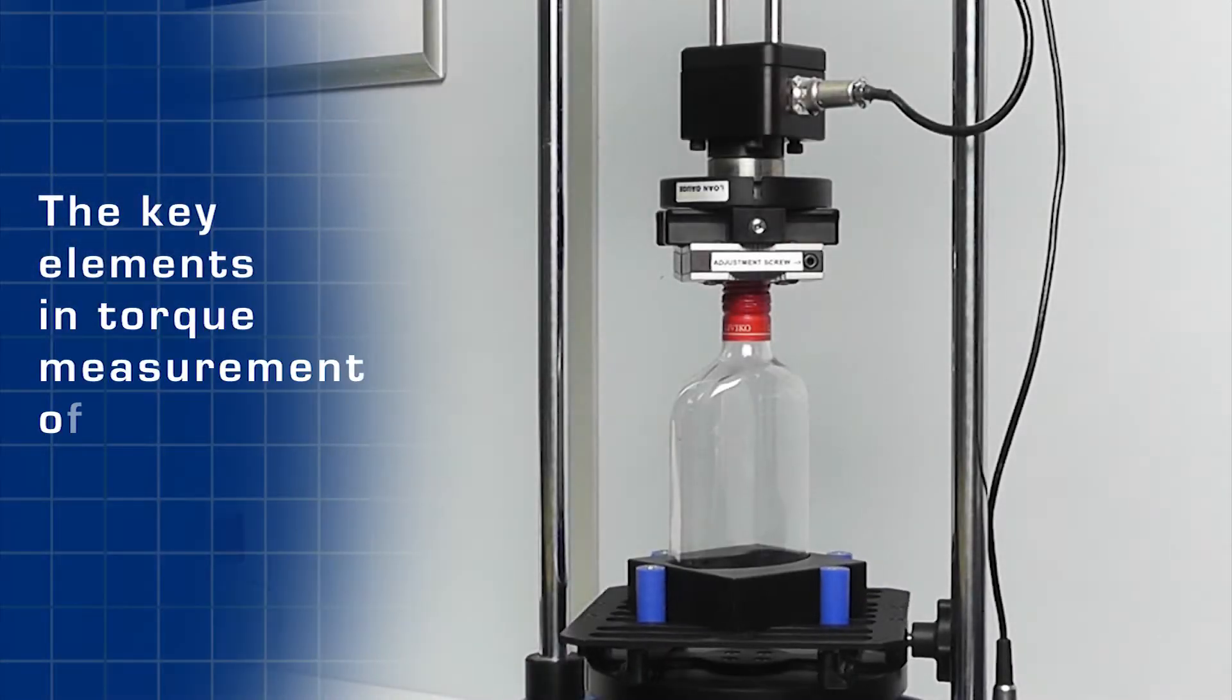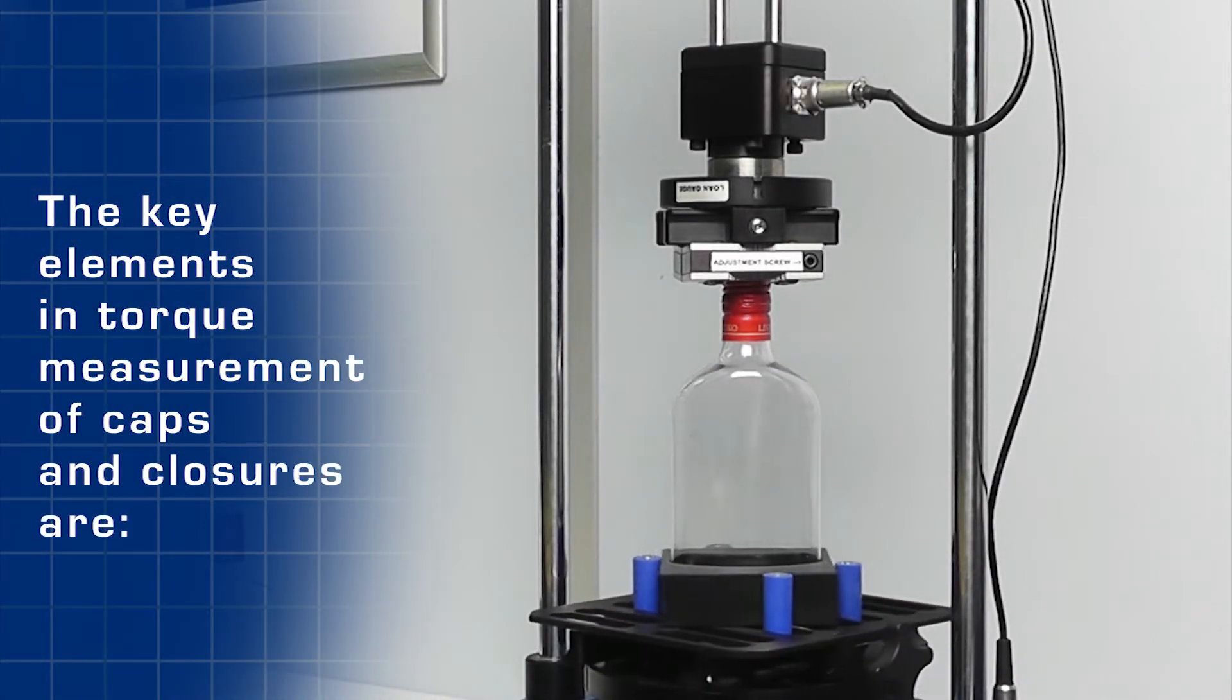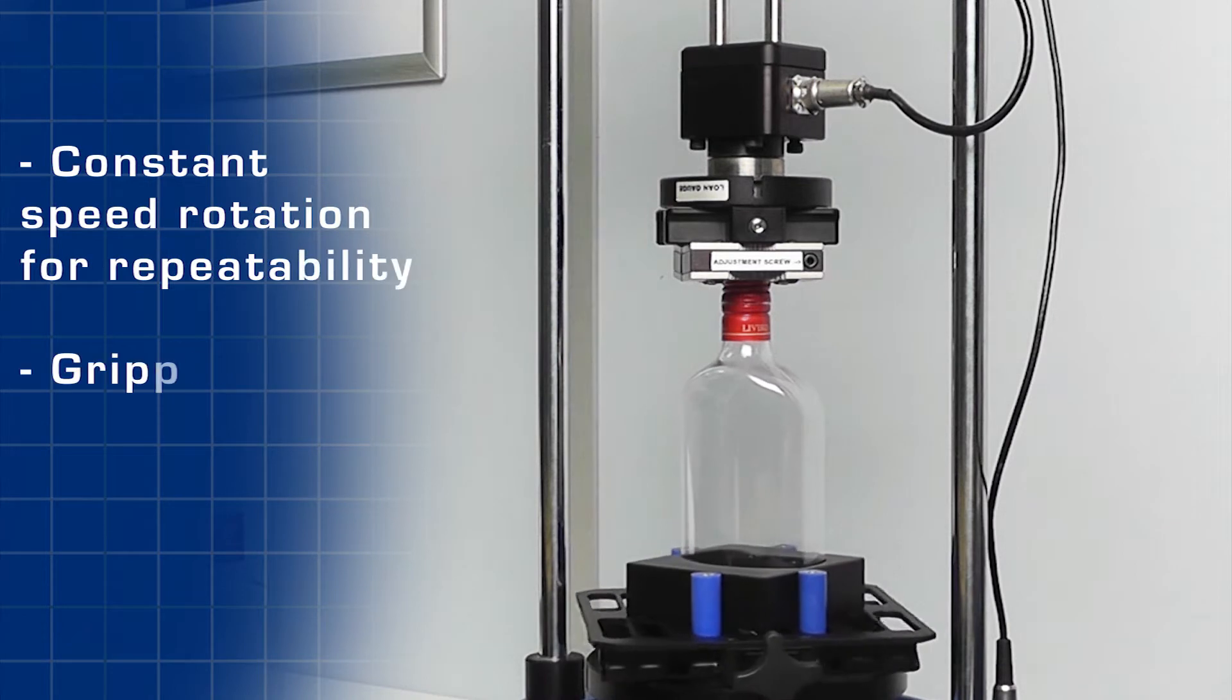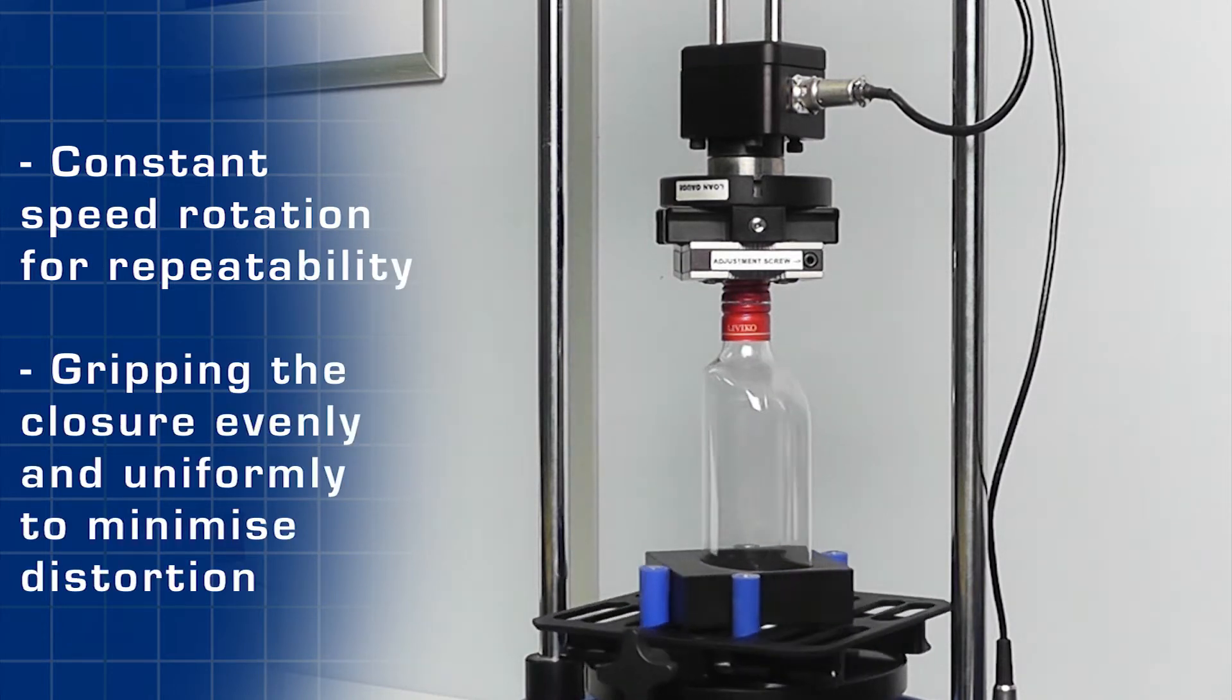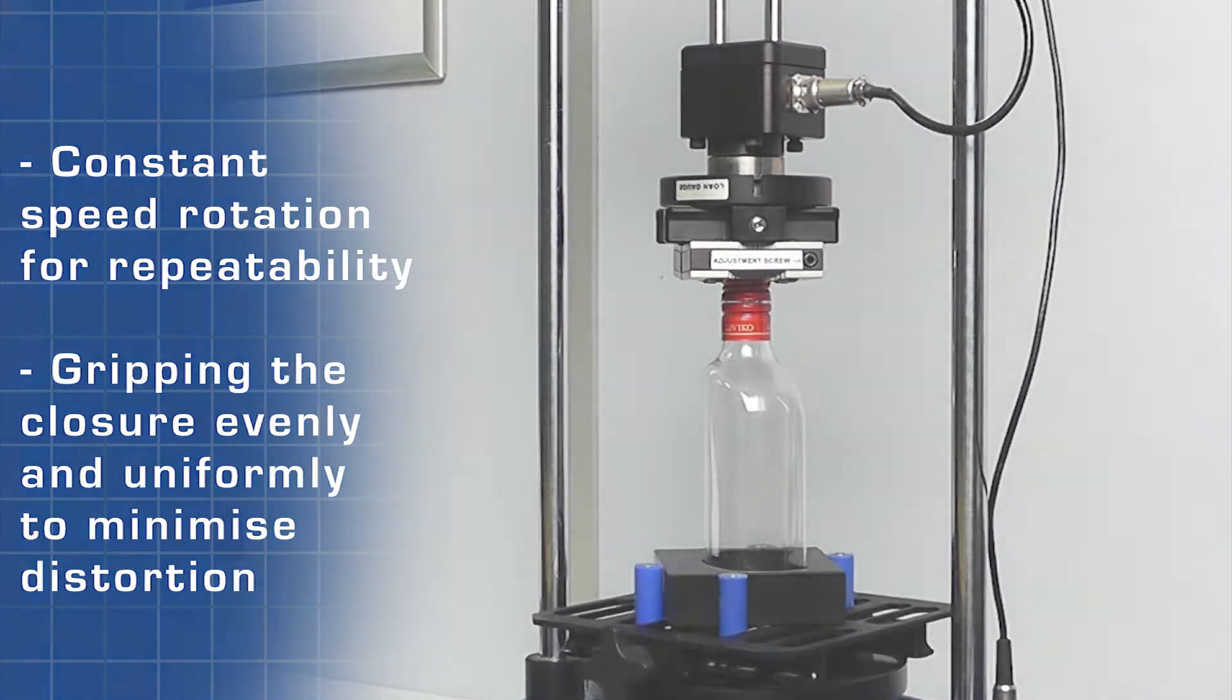The key elements in torque measurement of caps and closures are gripping the closure evenly and uniformly to minimize distortion, and constant speed of rotation for repeatability.